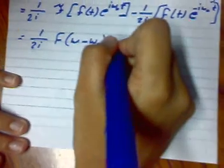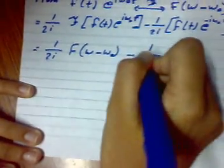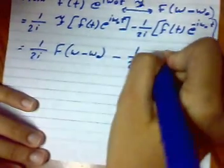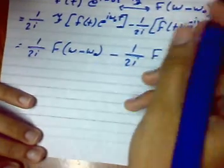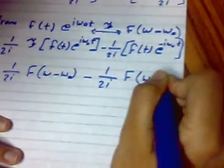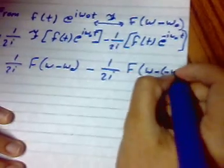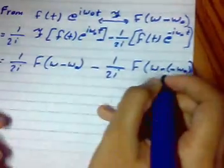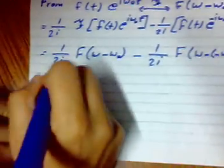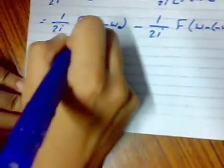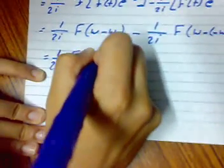And this is F of omega plus omega naught. So we get 1 over 2i F of omega minus omega naught minus 1 over 2i F of omega plus omega naught.